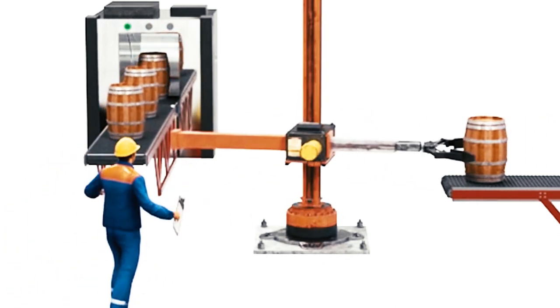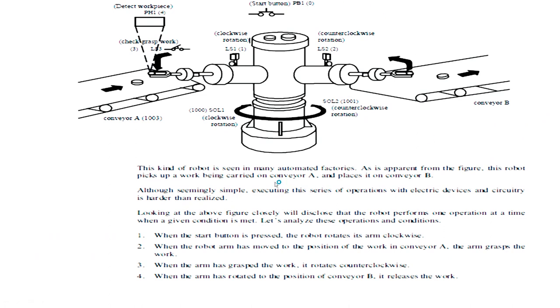In this particular example, you can see there is a robot here. It has one arm only and there are two conveyors, conveyor A and conveyor B. As you already seen in cinematic video, this kind of robot is present in automated factories. As you can see in the diagram, this robot will pick up a work from conveyor A and place it in conveyor B.